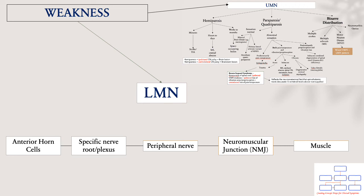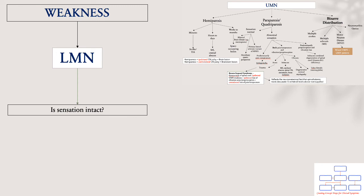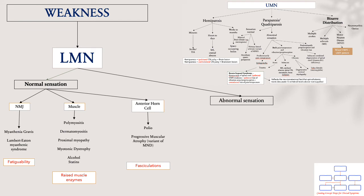In lower motor neuron weakness, the structures listed are in the peripheral nervous system in anatomical order as they exit the central nervous system — from anterior horn cells to your specific nerve root, your plexus, peripheral nerves, neuromuscular junction, and muscles. Lesions originating from any of these structures will give rise to lower motor neuron signs. Once you've identified a lower motor neuron pattern, the next thing to determine is whether sensation is affected.